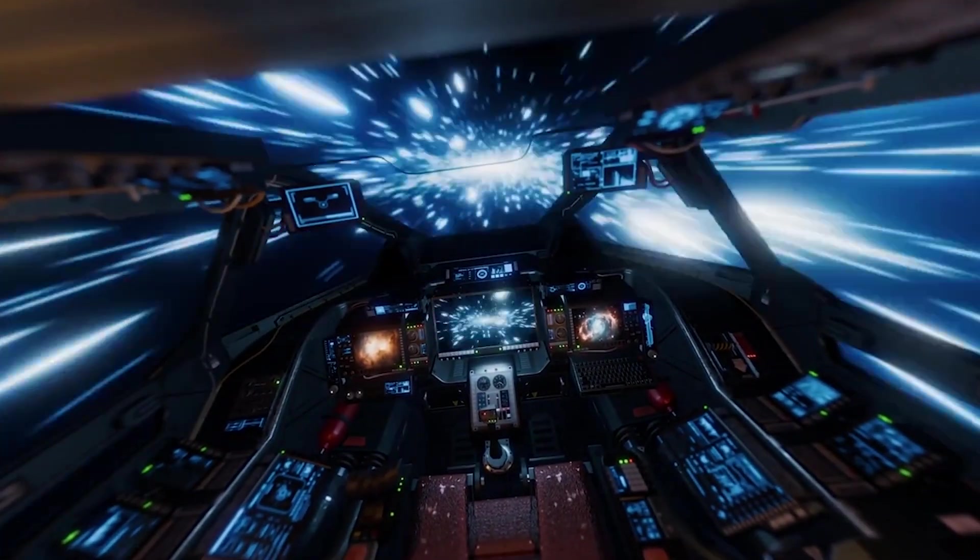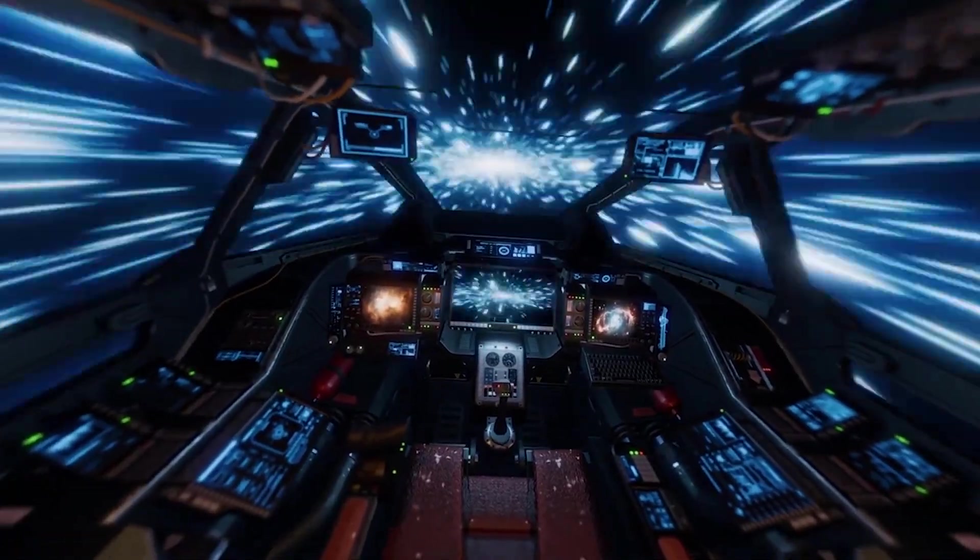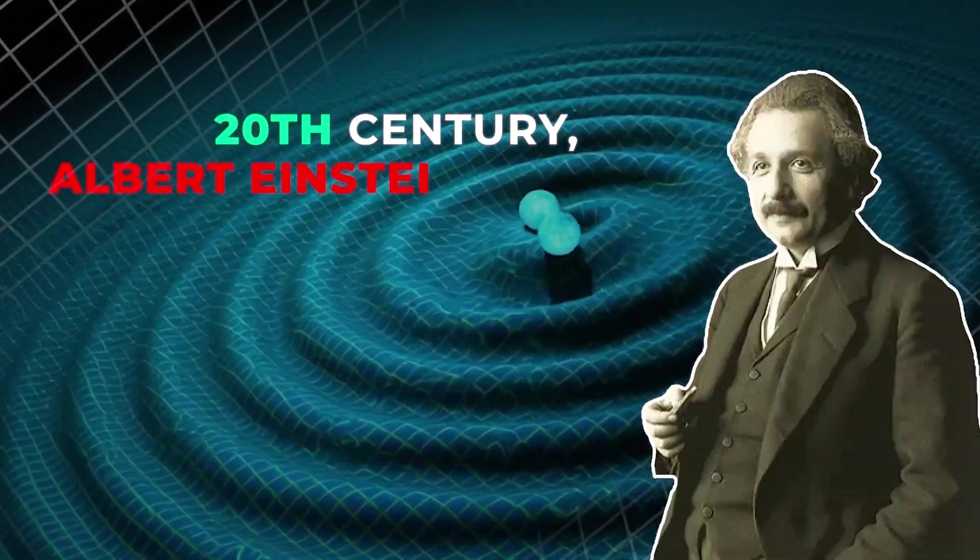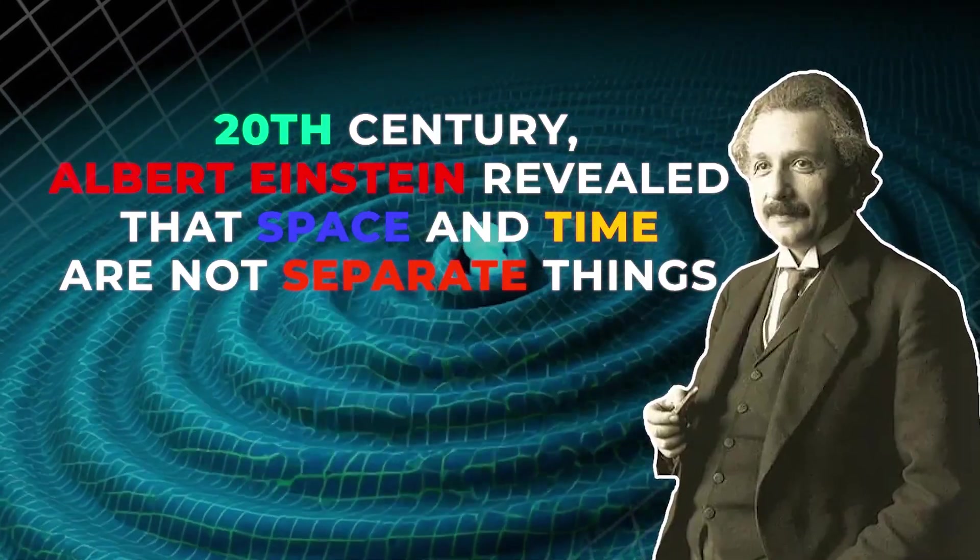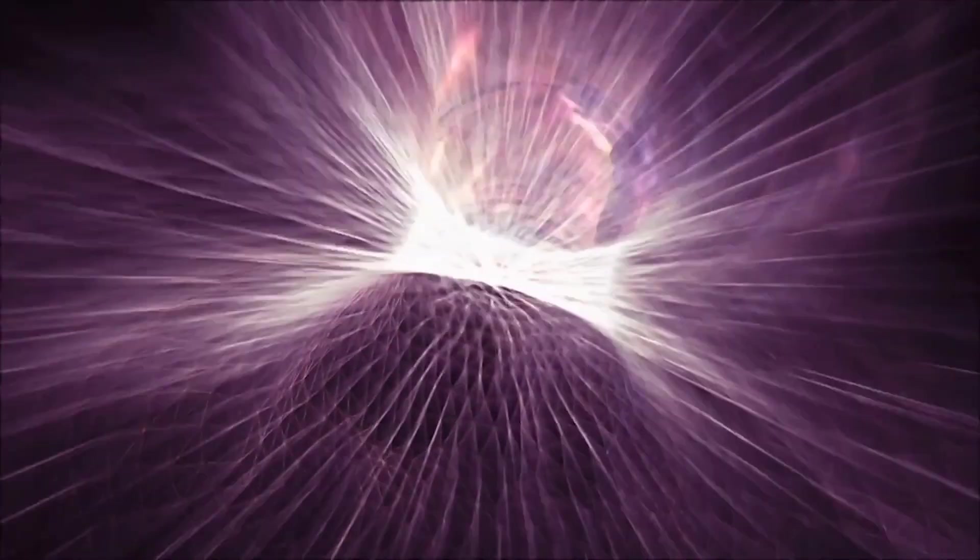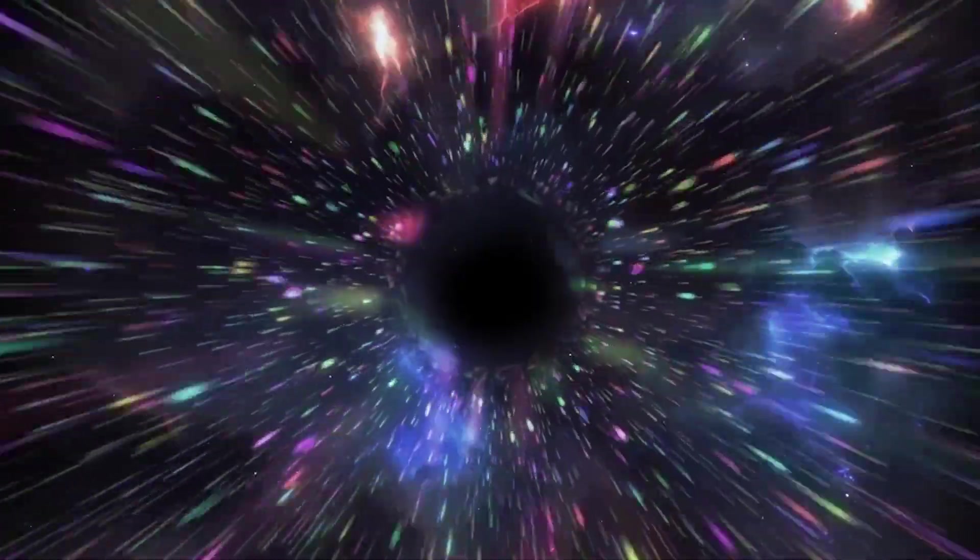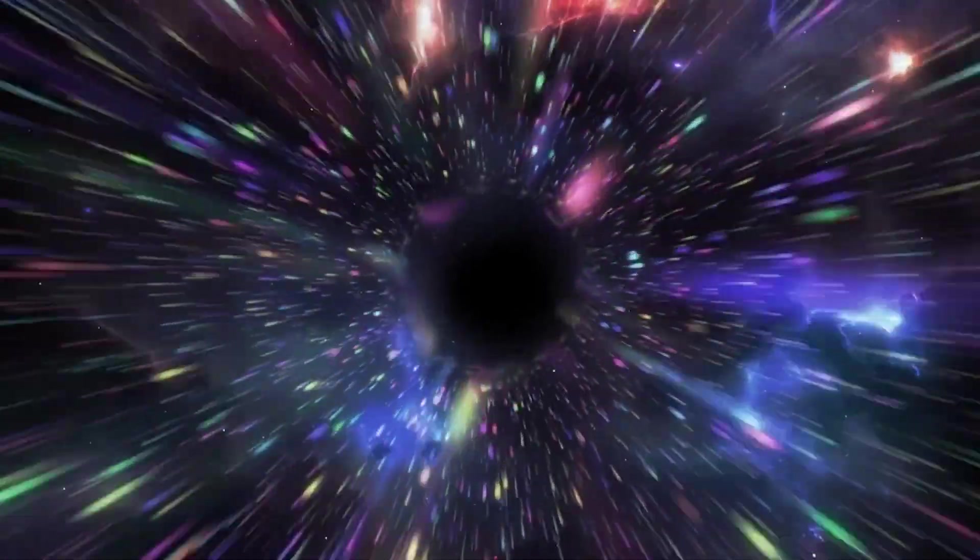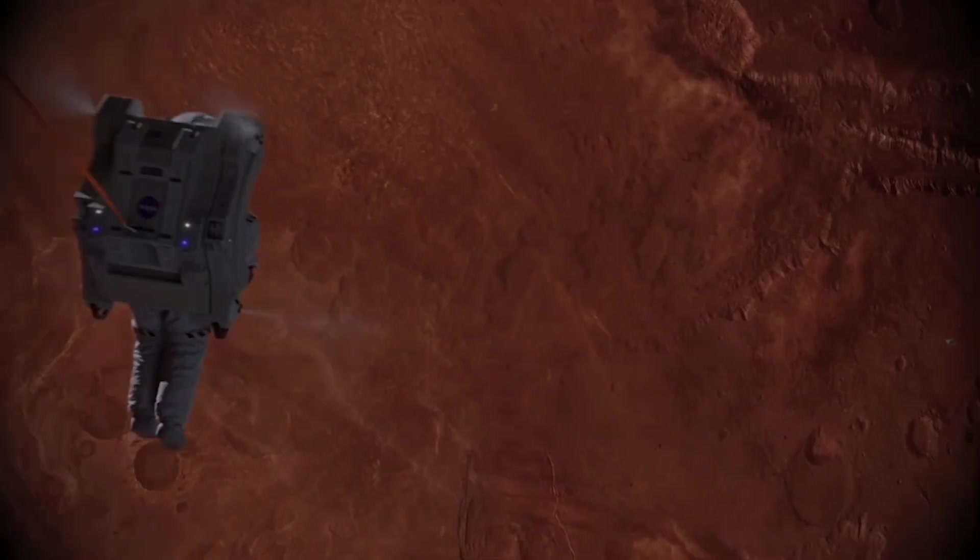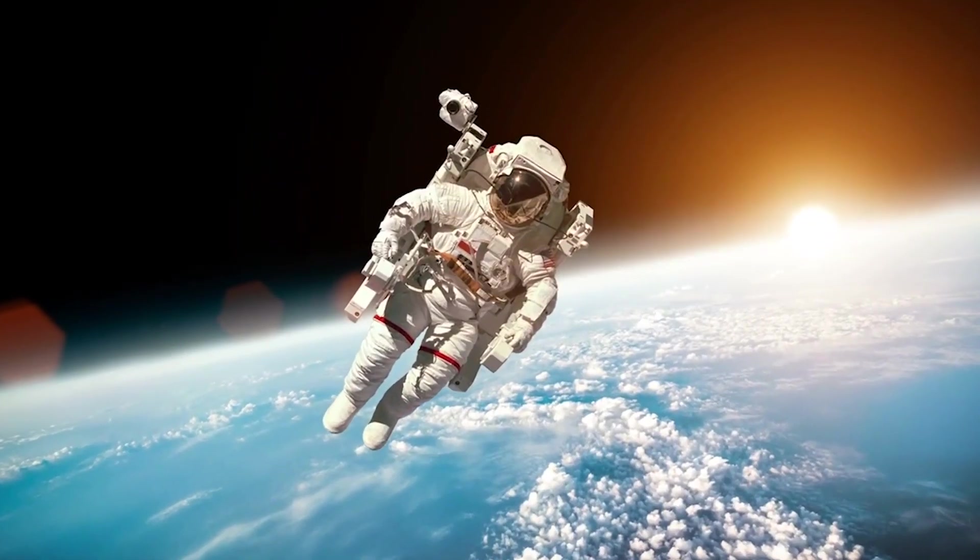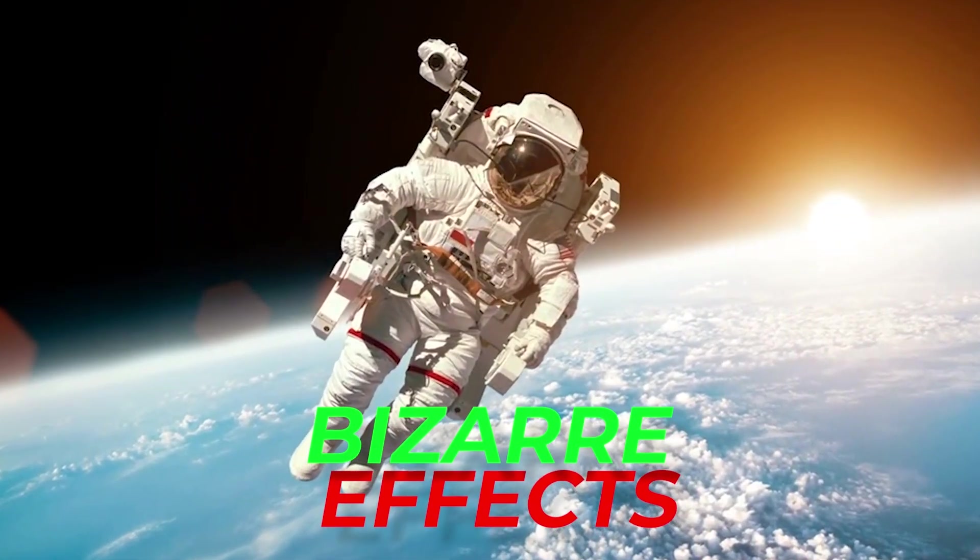First, it's important to understand why light speed is so special. In the early 20th century, Albert Einstein revealed that space and time are not separate things. They are one interconnected entity called space-time. Every movement through space also means movement through time. When you move faster through space, you move slower through time. This relationship is what creates the bizarre effects we're about to explore.